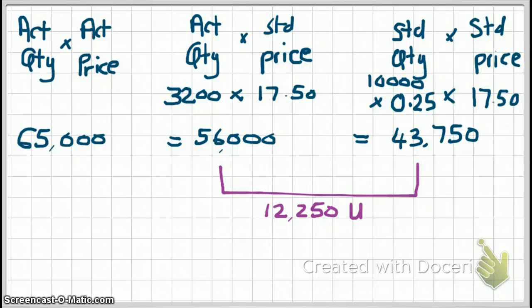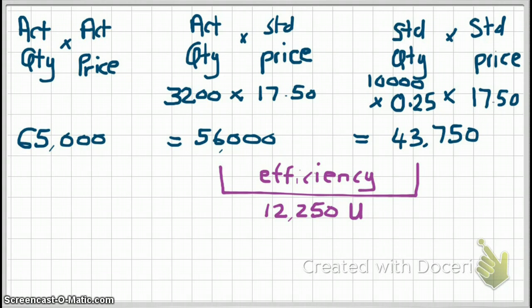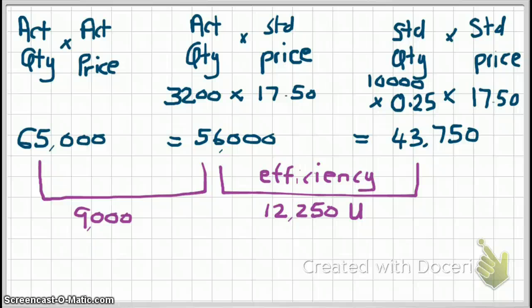When calculating variances, always calculate from right to left. The $12,250 is your efficiency variance. Next, let's calculate the rate variance. The direct labor rate variance is the difference between $65,000 and $56,000, which is $9,000. Going from right to left, you expected $56,000 but ended up with an actual of $65,000, so it is an unfavorable variance — your direct labor rate variance.